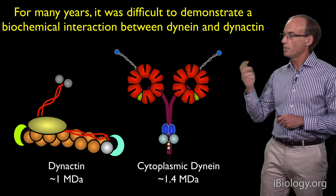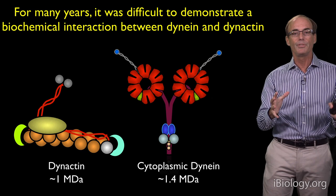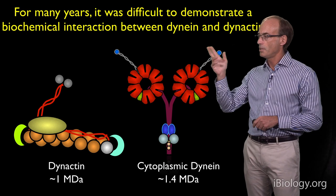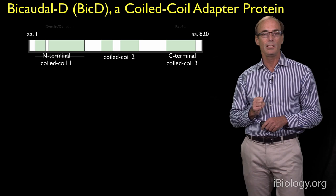But the conundrum is, for many years, although it was known that dynein and dynactin are involved in cellular activities together, it was very hard to demonstrate a biochemical interaction between dynein and dynactin. But this mystery was resolved when another protein came on the scene, called Bicaudal D, or BicD.